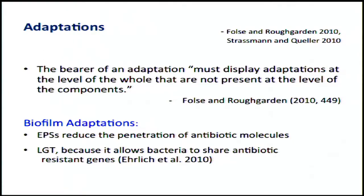There's a lot of talk in the biofilm literature about adaptations, and there's this issue about the level of adaptation — are there biofilm-level adaptations? Folse and Roughgarden talk about the bearer of an adaptation displaying adaptations at the level of the whole that are not present at the level of components. We seem to have that in multi-species biofilms. EPS reduces penetration of antibiotic molecules, and some people point out that lateral gene transfer itself is an adaptation to help spread other adaptations among the parts of a biofilm.